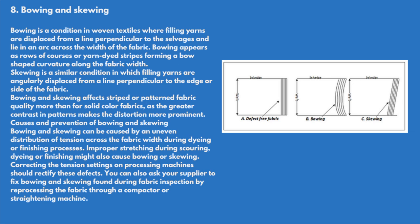Bowing and skewing affect striped or patterned fabric quality more than solid color fabrics, as the greater contrast in patterns makes the distortion more prominent. These defects can be caused by an uneven distribution of tension across the fabric during dyeing or finishing processes, or improper stretching during scouring, dyeing, or finishing. Correcting tension settings on processing machines should rectify these defects. You can also ask your supplier to fix bowing and skewing by reprocessing the fabric through a compactor or straightening machine.